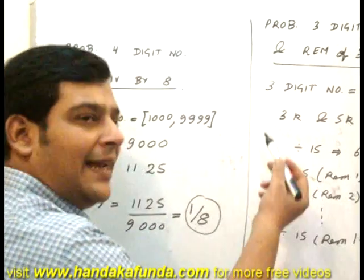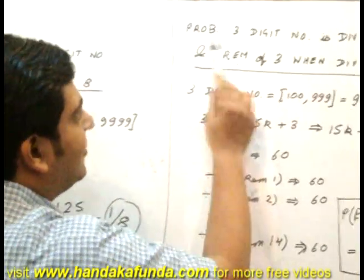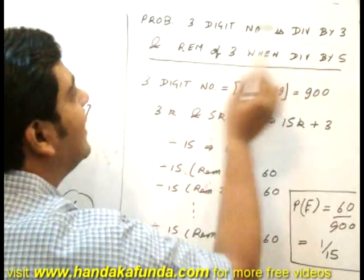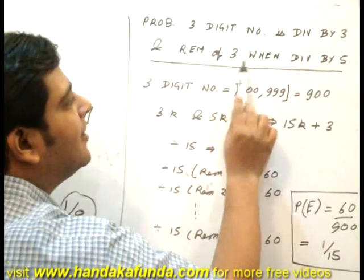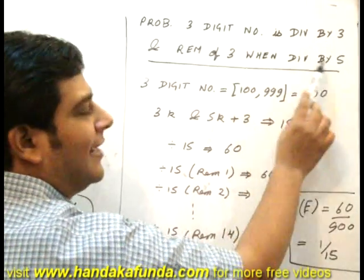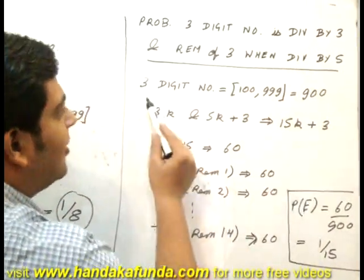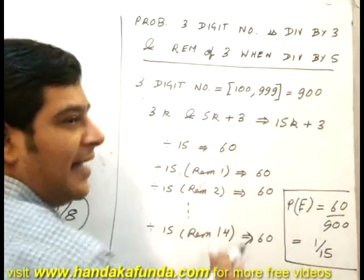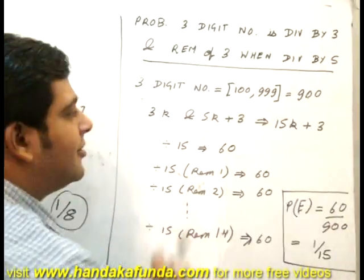Very similar but slightly difficult, the next question: the probability a 3 digit number is divisible by 3 and gives a remainder of 3 when divided by 5. First, how many 3 digit numbers are there? They start from 100 and go to 999. There are 900 such numbers.